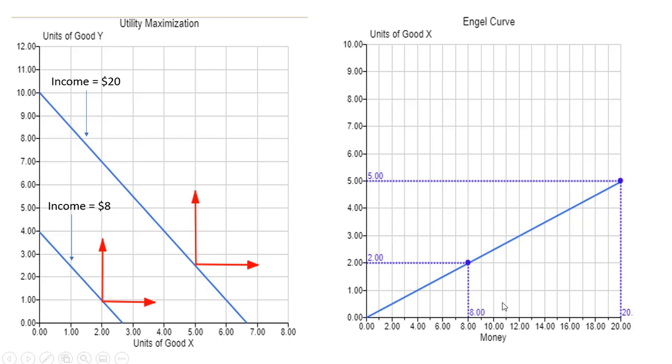According to the Engel curve here, if we had $8 of income here, what we're measuring on the x-axis, plugging that into the Engel curve, coming across, we see that the utility maximizing choice for good x is 2.